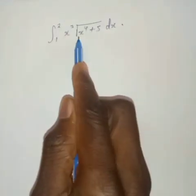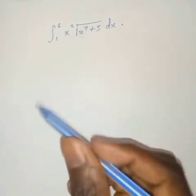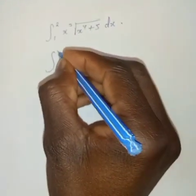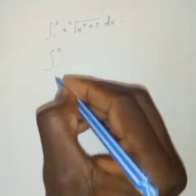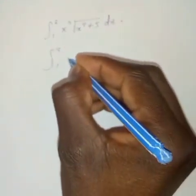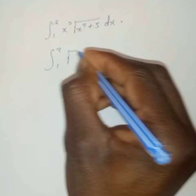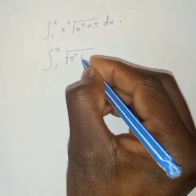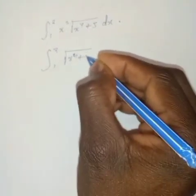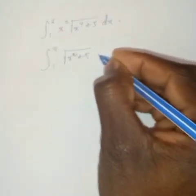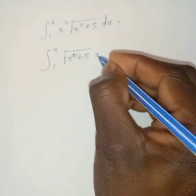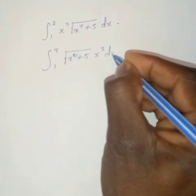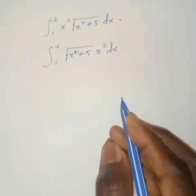I have to rearrange this by writing the integral from 1 to 2 of root of x to the power 4 plus 5, times x to the power 3, dx.